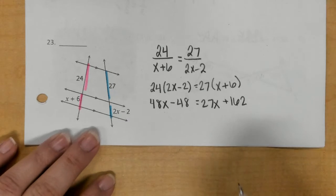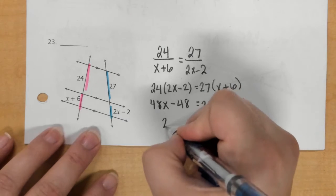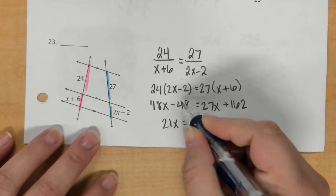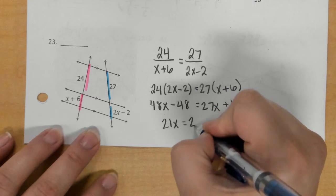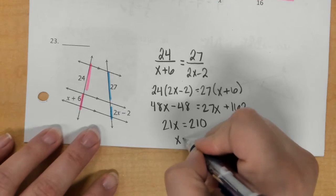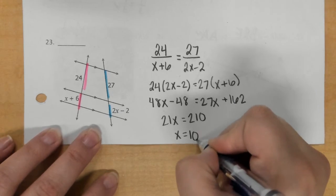If I subtract 27x, I get 21x. Then if I add 48 to the other side, I get 210. So, if I divide x... Oops, it's done.